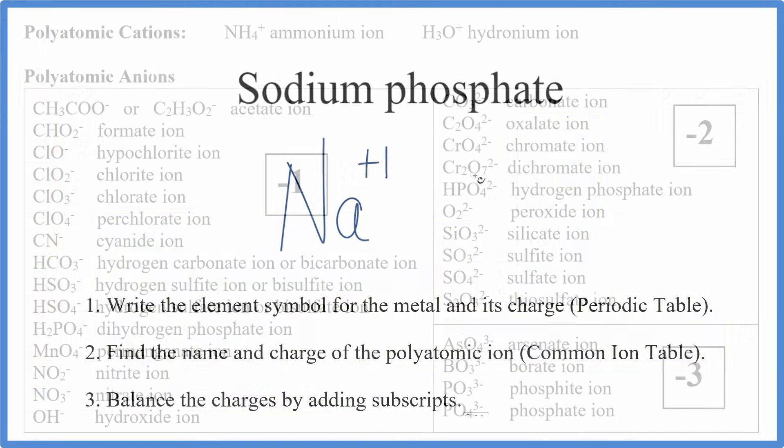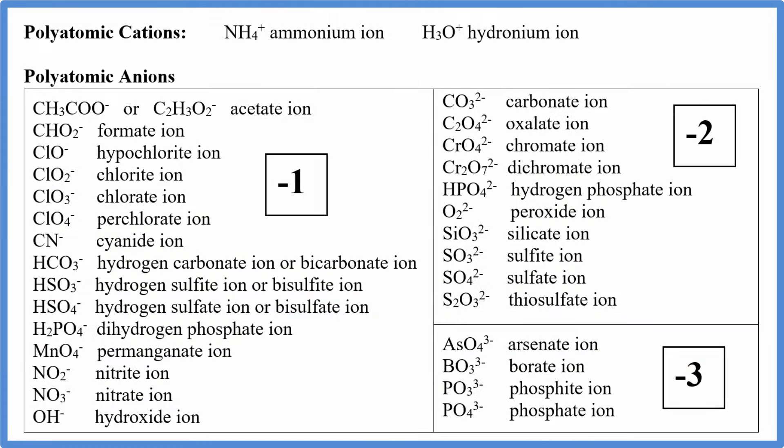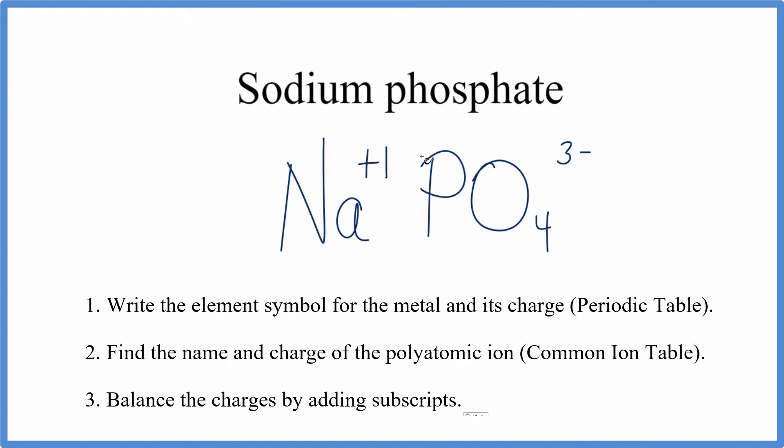We look up the phosphate on the common ion table, and phosphate turns out to be PO4 3 minus. The 3 minus applies to this whole PO4. This thing stays together. We can think of it as one thing. So we have our 3 minus here, but a plus 1 here. They're not balanced. So to cancel out the minus 3, we'll need a plus 3. We can do that by changing the subscript. We'll put a 3 here. That means we have three sodium atoms. 3 times plus 1, that's plus 3. And that'll cancel out the minus 3, making NA3PO4 the formula for sodium phosphate.